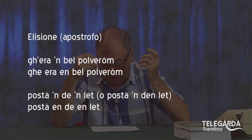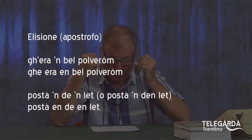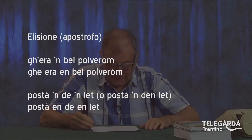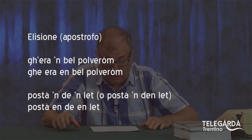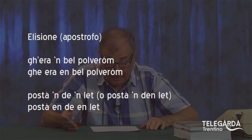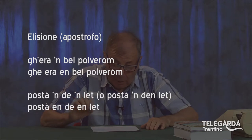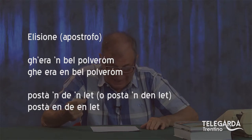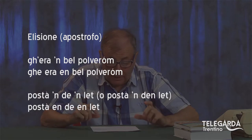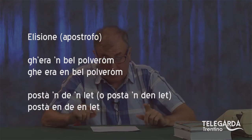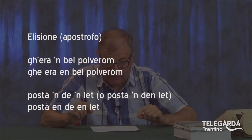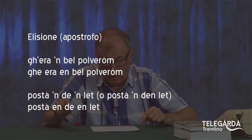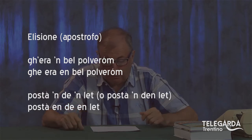Naturalmente polveróm, vedete una bella O chiusa accentata. Postà 'n del let sta per postà en de en let: cade la E, diventa postàn; poi de en let, cade anche lì la E e al suo posto va l'apostrofo, quindi postà d'en let. Qualcuno scrive postàn den let — cioè den tutta una parola — invece che separare de apostrofo en.